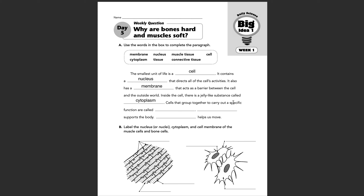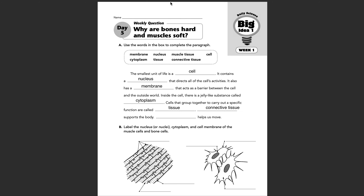Cells that group together to carry out a specific function are called tissue. Remember, certain tissues perform certain functions: there's muscle tissue, connective tissue, skeletal muscle tissue. Blank supports the body — we have muscle tissue and connective tissue left, so connective tissue would support the body. That's bones, ligaments, cartilage, tendons. And then, blank helps us move — that would be muscle tissue.